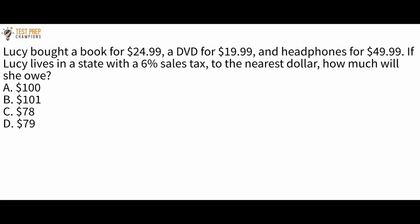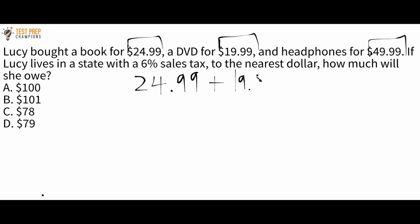Lucy bought a book for $24.99, a DVD for $19.99, and headphones for $49.99. If Lucy lives in a state with a 6% sales tax, to the nearest dollar how much will she owe? The first step is to add $24.99, $19.99, and $49.99. Adding these up gives $94.97.